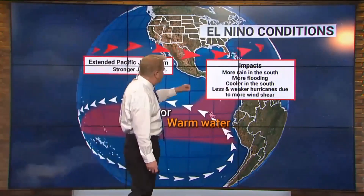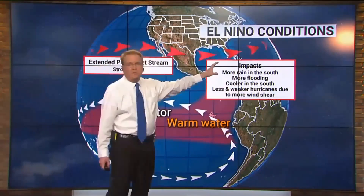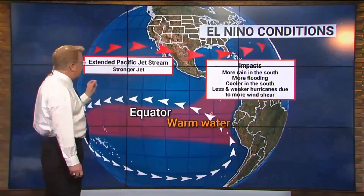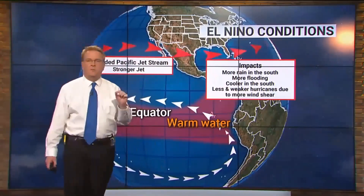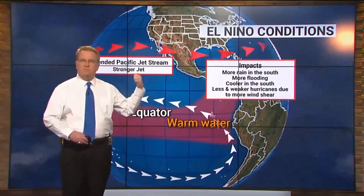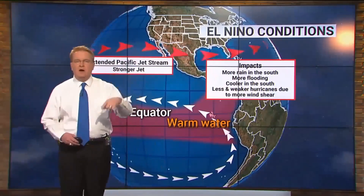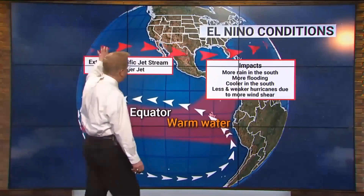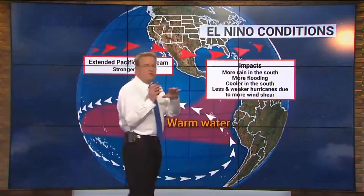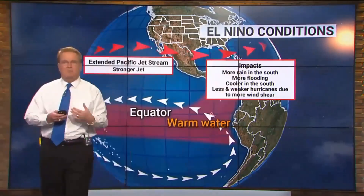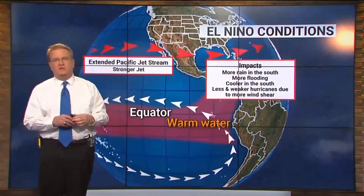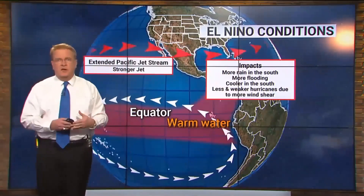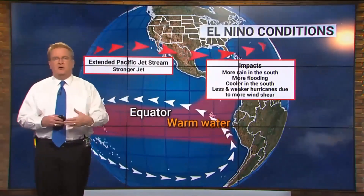Because you've got more cloud cover, it's going to be cooler across the southern parts of the country because you're blocking out sunlight. Also, you get fewer and weaker hurricanes due to more wind shear. Everything else is amplified, but hurricane season is actually diminished. That's because these stronger winds flow across into the Atlantic, causing wind shear that breaks down hurricanes and causes them to fall apart faster or have a harder time strengthening. So El Niño years are good years for hurricane season.